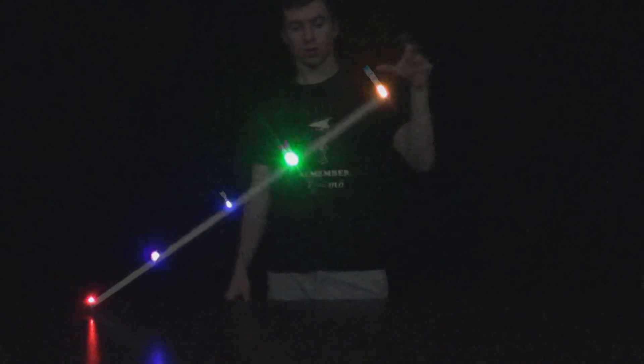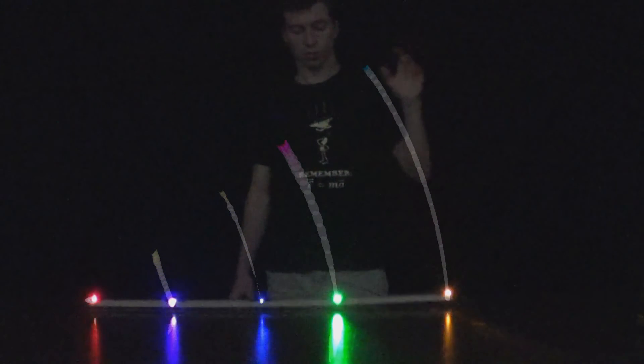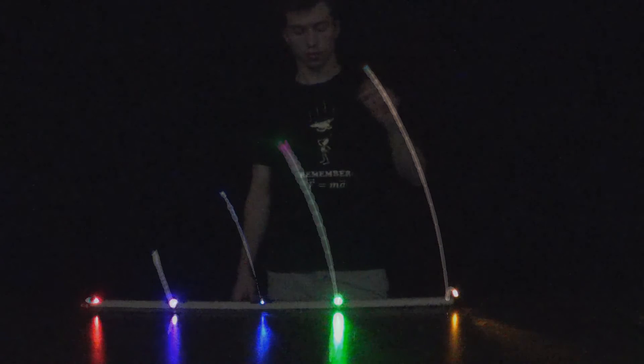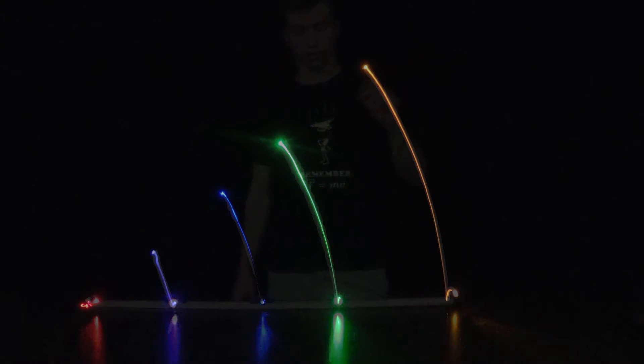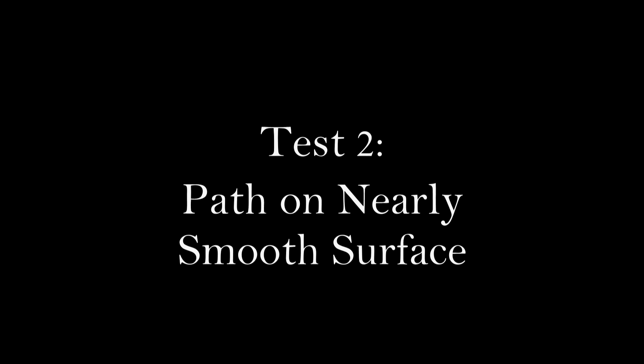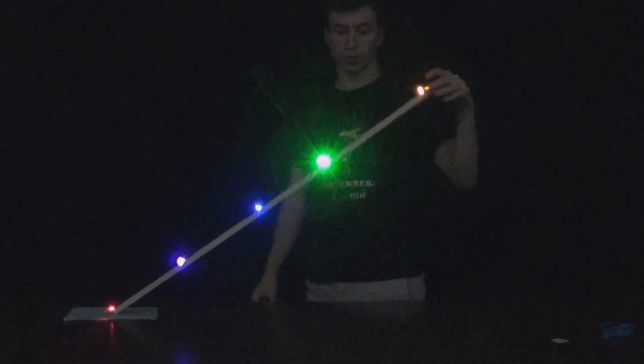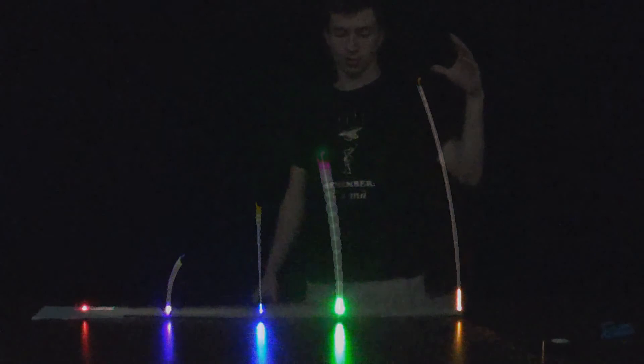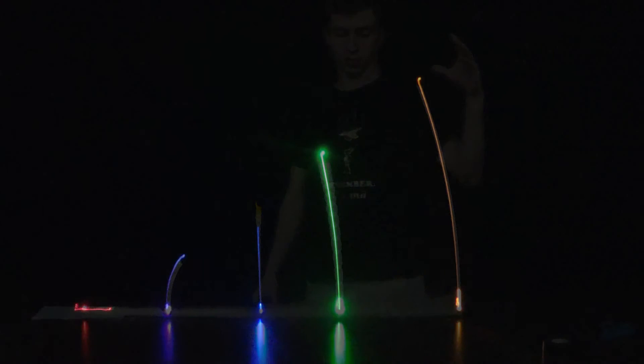In the first test, on the friction surface we notice the red light does not move horizontally and the center of mass, the blue light, moves in a curve to its final position. On the nearly smooth surface we see that the red light moves horizontally and the center of mass moves in a straight line to its final position.